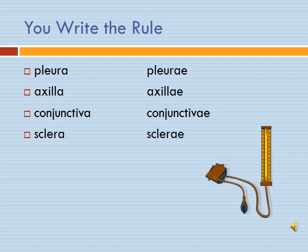Are you ready for our next rule? Pleura is singular; pleurae is plural. Axilla is singular; axillae is plural. Conjunctiva is singular; becomes conjunctivae, plural. Sclera becomes sclerae. What's our rule here? Think about what's going on and click to the next slide.